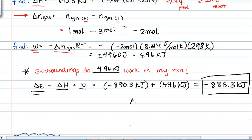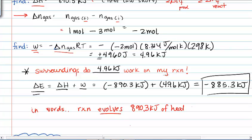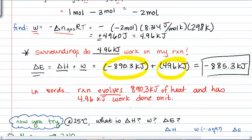So if you're asked to find ΔE, we need to find ΔH, but we also need to find work in order to do that. And if I were to say that in words, what does this mean, having come up with these numbers? I would say that the reaction evolves, evolves is a word that means gives off, 890.3 kilojoules of heat and has 4.96 kilojoules of work done on it. And that's what that kind of really means by coming up with these values of the 890.3 and the work itself.